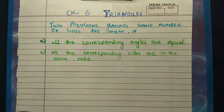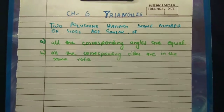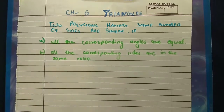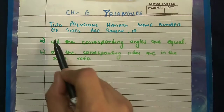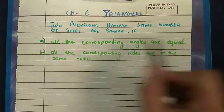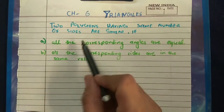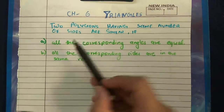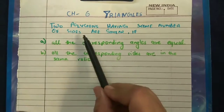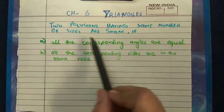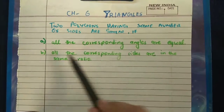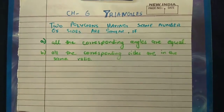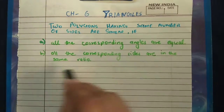But what is it? When are the triangles the same or not? What do we mean by 'same'? Two polygons have the same number of sides. The two polygons having the same number of sides are similar if all the corresponding angles are equal, and all the corresponding sides are in the same ratio.